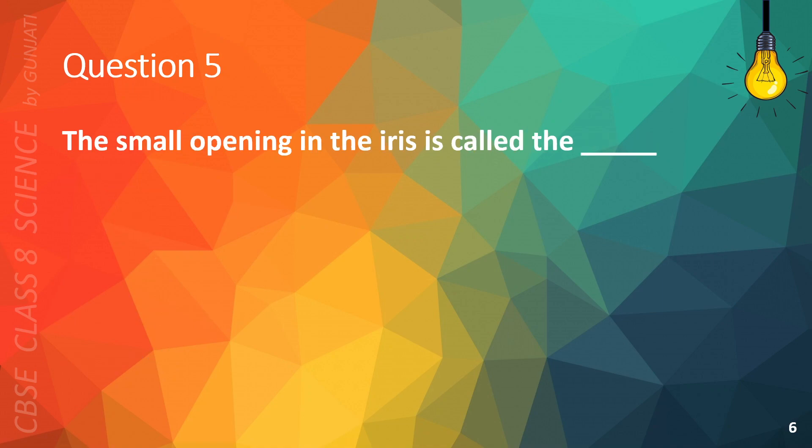Question 5. The small opening in the iris is called A. Blindspot, B. Retina, C. Pupil, or D. Iris hole. The correct answer is C. Pupil.